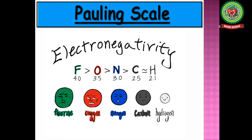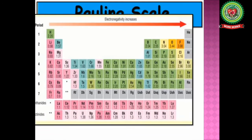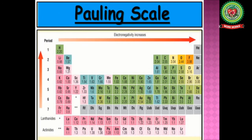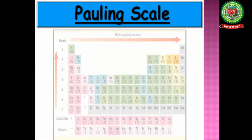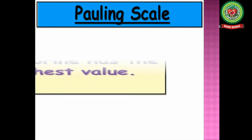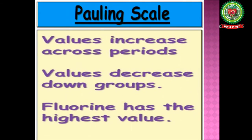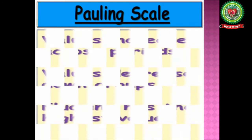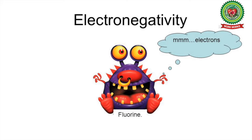On the Pauling scale, the value of electronegativity is highest for fluorine, which is taken as 4, and the lowest is for cesium, which is taken as 0.79 or approximately 0.8. Electronegativity value increases across a period, while its value decreases while moving down a group, and fluorine has the highest electronegativity value.